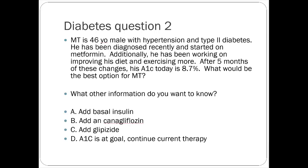Here's a Type 2 case: a 46-year-old male, hypertensive, recently diagnosed with Type 2 diabetes, started on metformin, working on diet and exercise. After five months his A1C is still 8.7%. The way I'm going to phrase exam questions will give you additional patient-specific information — the different guidelines don't necessarily conflict; it's really all about patient-specific factors that lead you to one drug versus another.